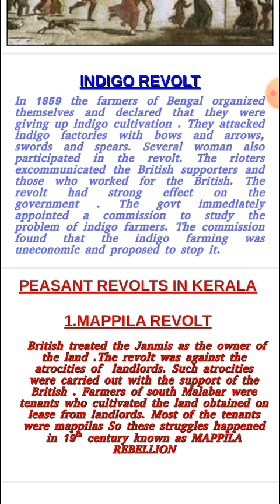This led the life of the indigo farmers to be very pathetic and miserable. In 1859, the farmers of Bengal organized themselves and declared that they were giving up indigo cultivation. They attacked the indigo factories with bows and arrows, swords, and spears.